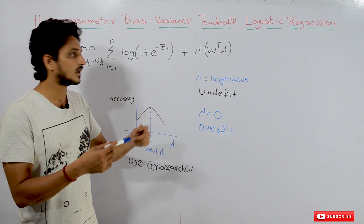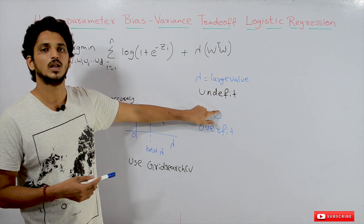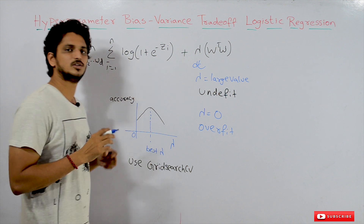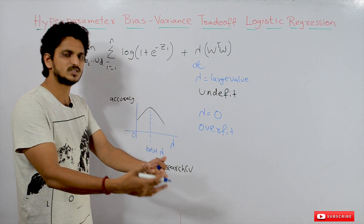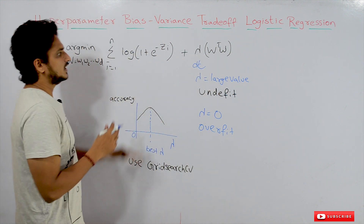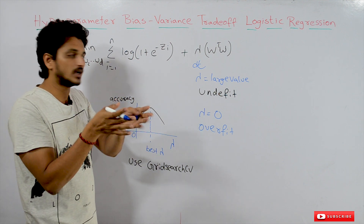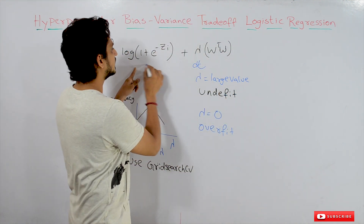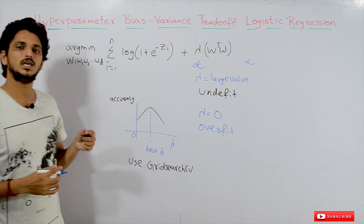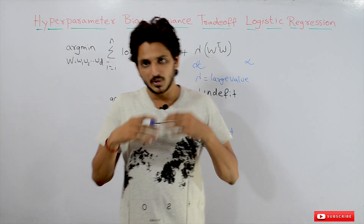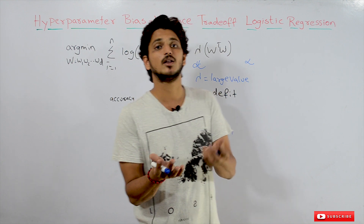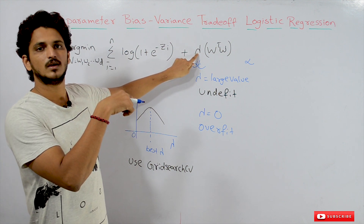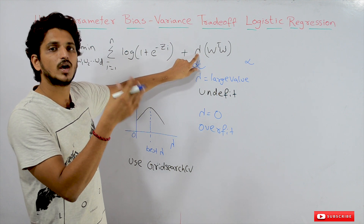Conversely, whenever the lambda value is large, we get an under-fitted model. Why? Let's assume lambda equals some very large value — infinite. When lambda is infinite, even if you pick the correct w values and your loss function is in a good position, the entire objective value becomes infinite. Whether you pick the right w values or not, the result is dominated by the lambda term, not the loss function.